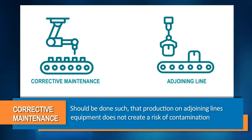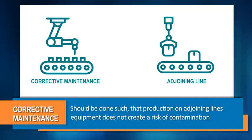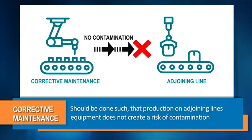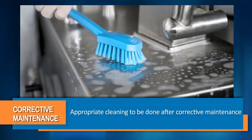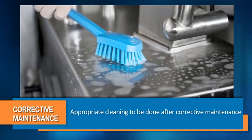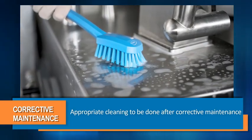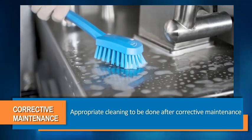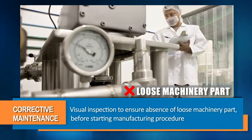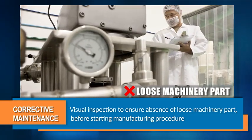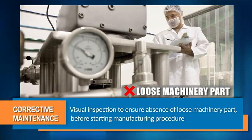Corrective maintenance shall be carried out in such a way that the production on adjoining lines or equipment does not create a risk of contamination. Appropriate cleaning shall be done after carrying out corrective maintenance.